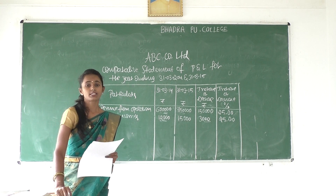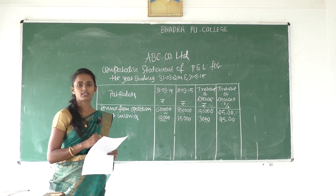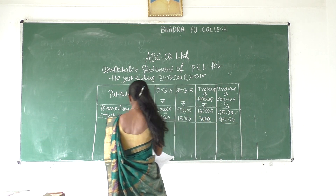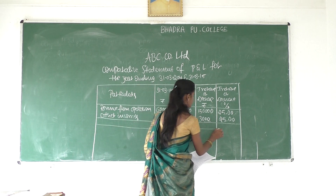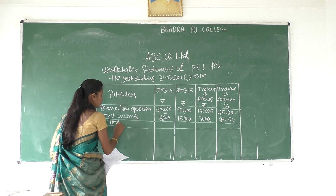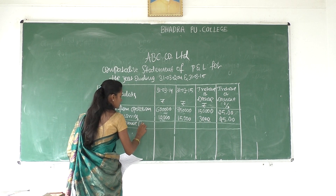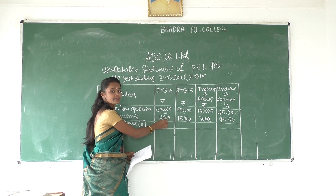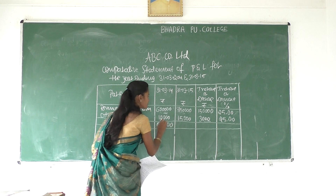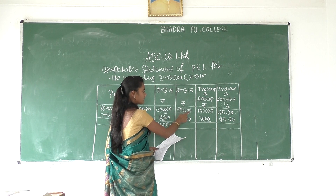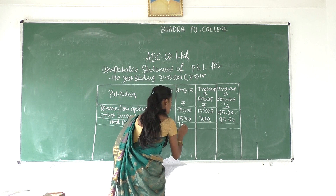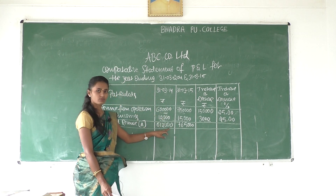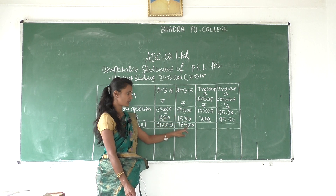Next one is total revenue. That is total revenue. This is the total revenue. Here are my total: 6,000 plus 12,000, and here 7,000 plus 15,000 — it is 7,000 and 65,000. So 6,000 plus 12,000, and 7,000 plus 15,000, and 7,000 plus 65,000.